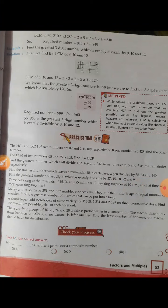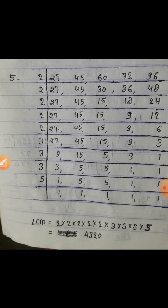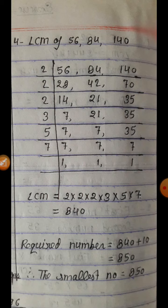Question number 5: Find the greatest number of six digits which is exactly divisible by 27, 45, 60, 72, and 96. पहले इन सबका LCM निकालेंगे division method से। LCM of 27, 45, 60, 72, 96 — solution screen पर है।